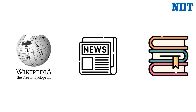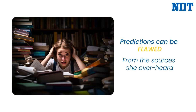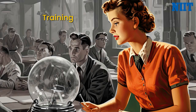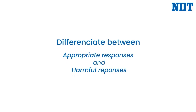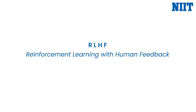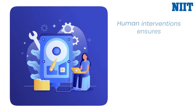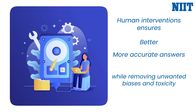However, there's a twist. Lexi's predictions can sometimes be flawed, as she might suggest answers based on toxic or biased data from sources she overheard. To fix this, Lexi undergoes training where humans step in to guide her, helping her differentiate between appropriate responses and harmful ones. This process is similar to reinforcement learning with human feedback, or RLHF, where human intervention helps fine-tune the system, ensuring better, more accurate answers while removing unwanted biases or toxicity.